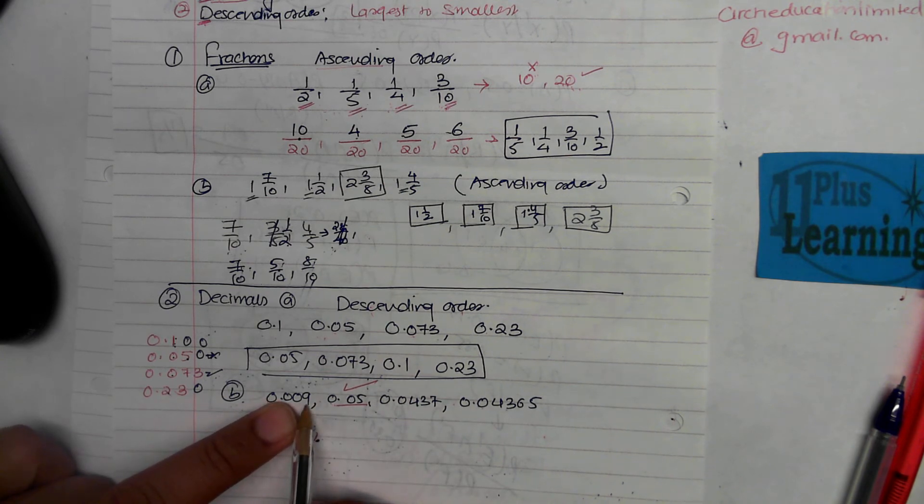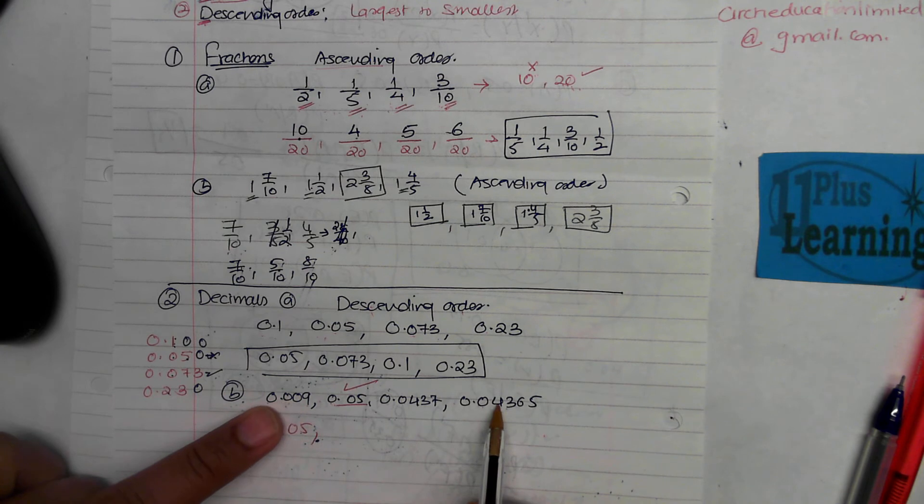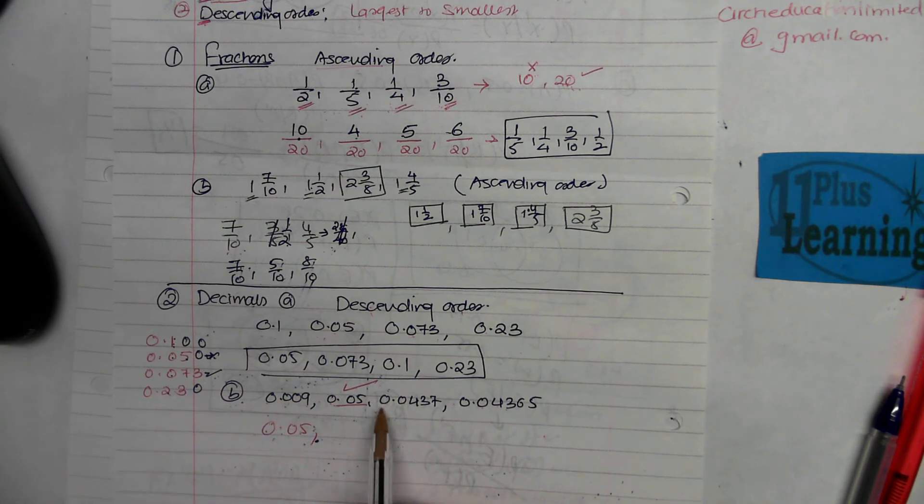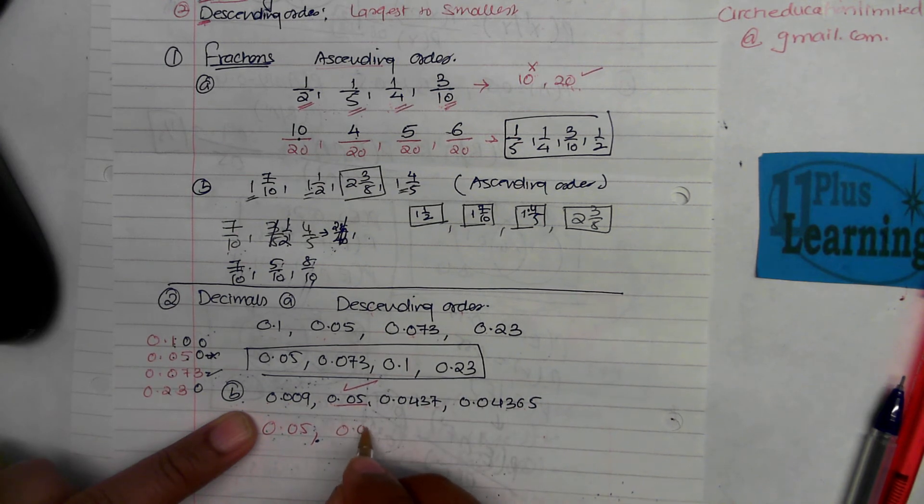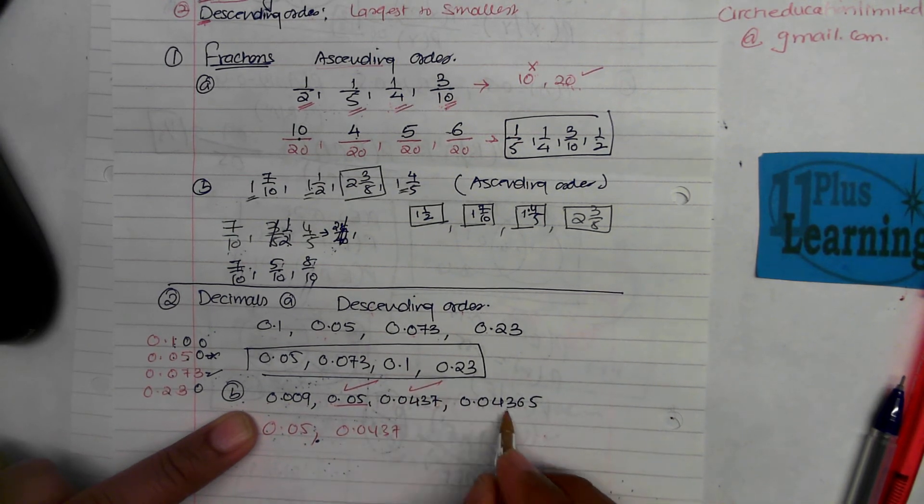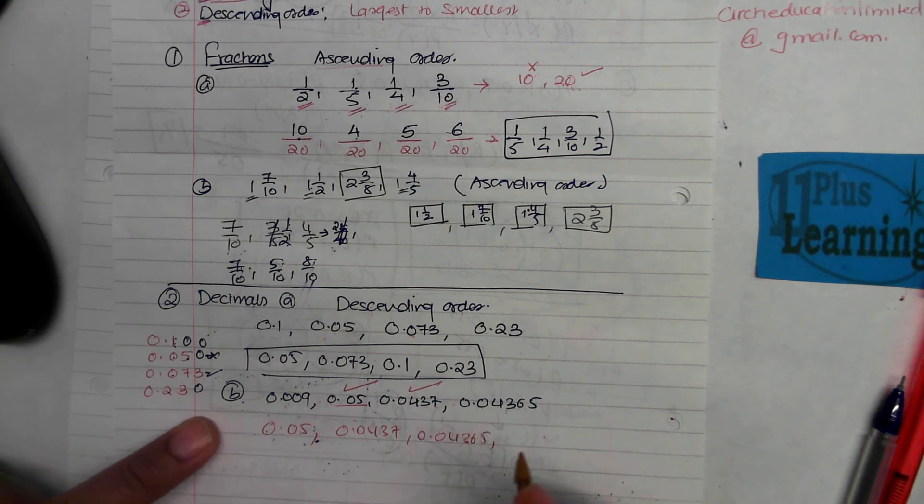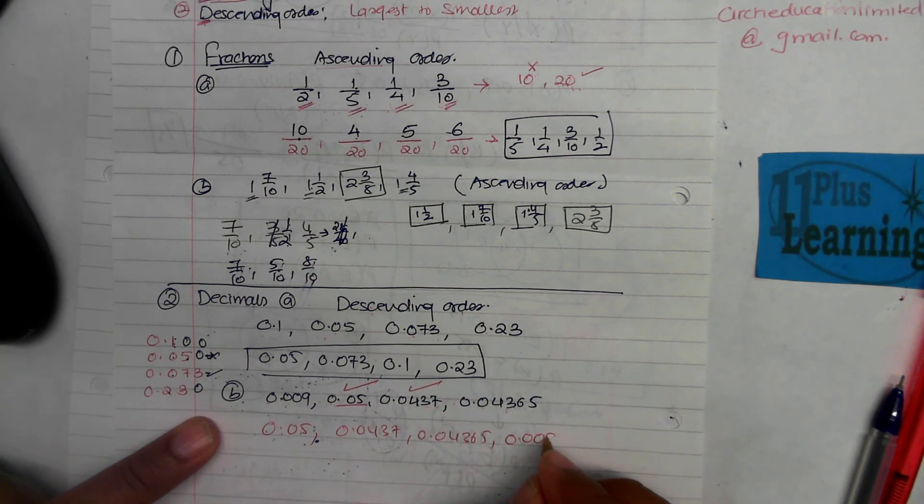I'm looking at the thousandths place. So five and there's a four there as well. These two, so the hundredths place, that's a four, that's a four. We check the next one over here: three. Next one is three, can't compare. Next one is seven, next one is six. So this is 0.0437, and then 0.04365, and the last one is 0.009. This is the descending order.